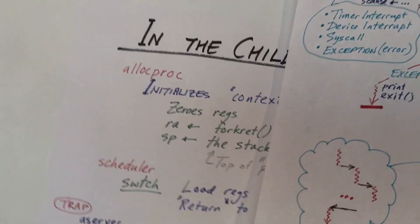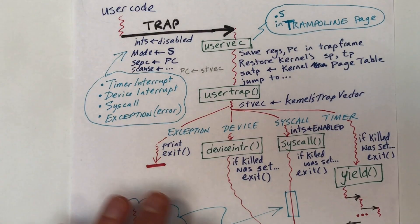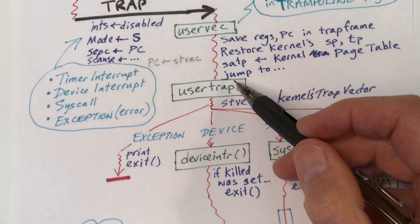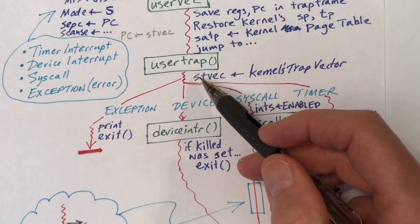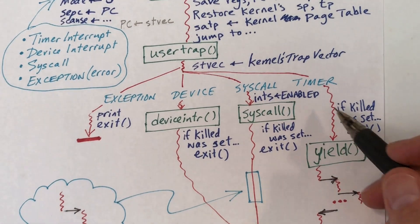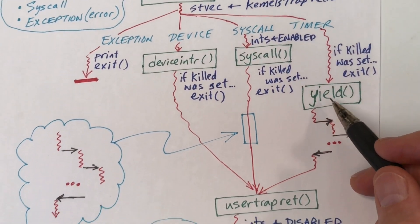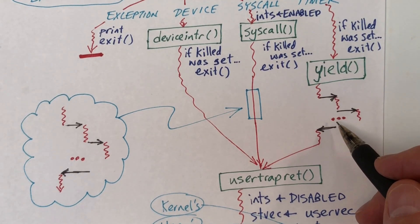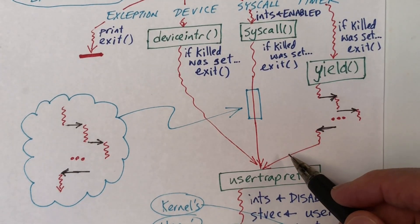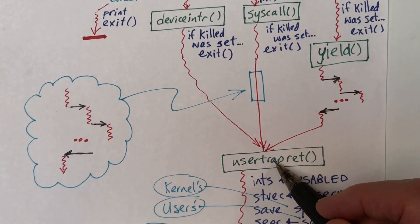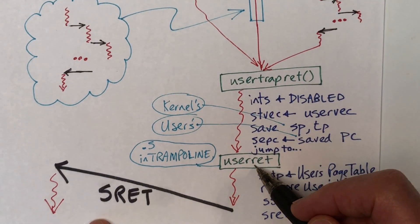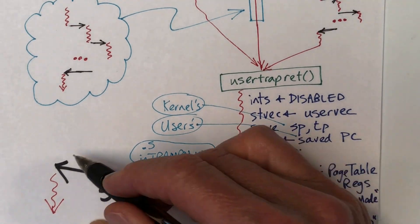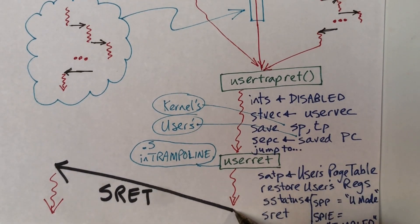Since stacks grow downward, we save the pointer to the top of that page. So we have a fresh stack and a starting address in the function called forkret. To understand this fully, let's review what happens in a trap. We save the registers in uservec. Usertrap figures out what's going on — let's say it's a timer interrupt and we call yield. Yield does some things and eventually calls switch. Ultimately yield returns, and then usertrapret is invoked, which calls userret, which restores the registers and returns to user mode with the sret instruction.